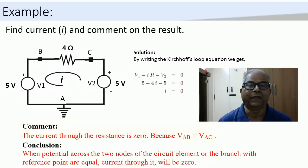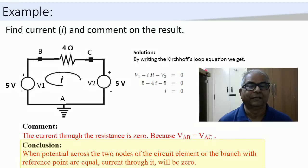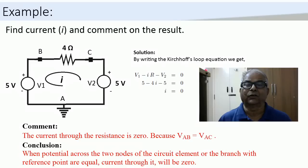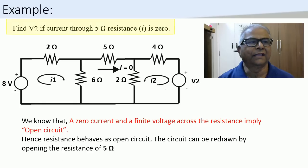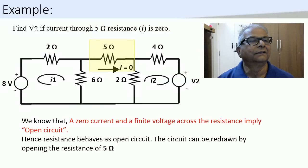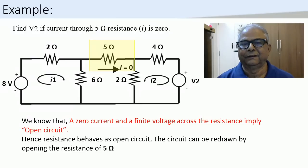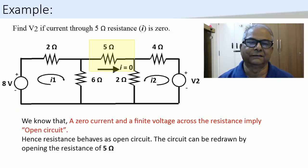That is, phi AB is equal to phi AC. Hence, we can conclude that when the potential across the two nodes of a circuit element or a branch of a circuit are equal, the current flowing through it is zero. To find the source voltage V2 in the circuit shown, we know that the current I is equal to zero in the 5-ohm resistance. Recalling the open circuit concept, a zero current and a finite voltage across the resistance implies open circuit.